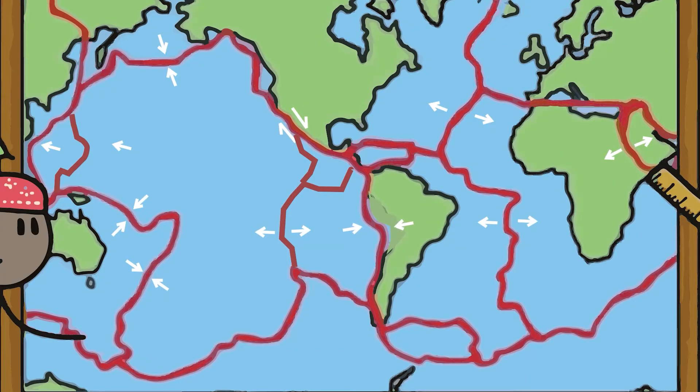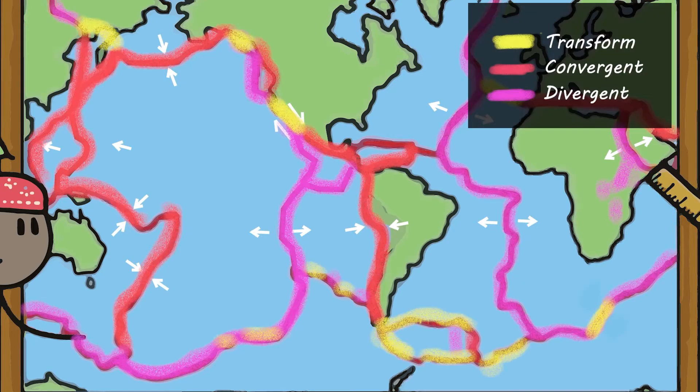Plates can move towards or away from each other, and they can also slide past each other. The different kinds of movement between the two plates creates different landscapes and forms different plate boundaries.